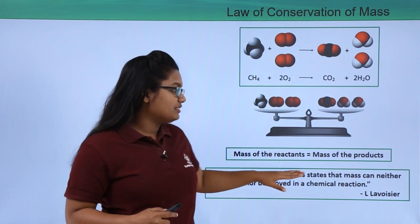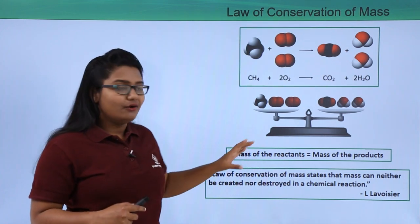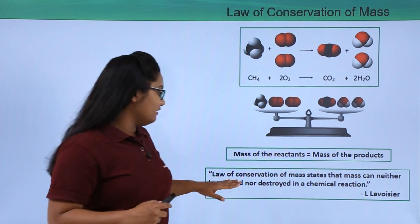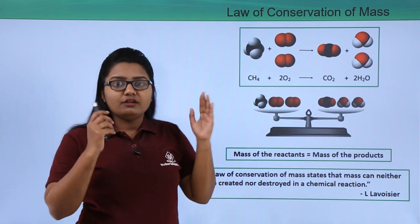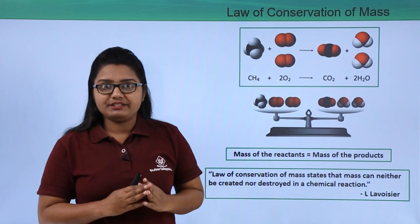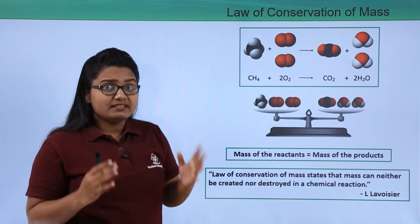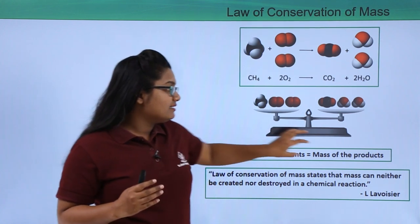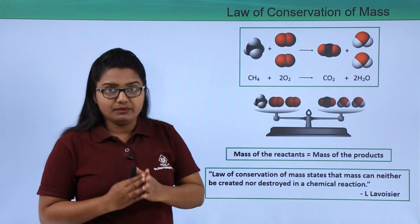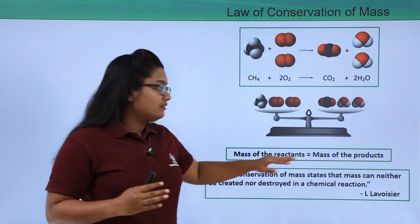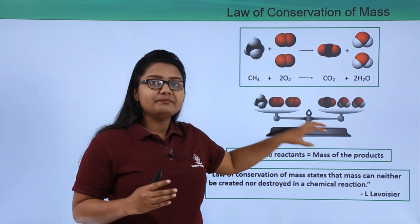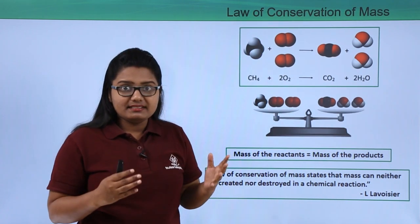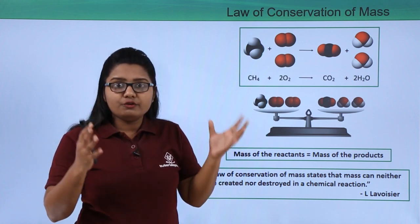By noticing this, Lavoisier put forth his law, named the Law of Conservation of Mass. This law states that mass can neither be created nor destroyed in a chemical reaction, which means the mass of the reactants and products will be exactly equal.